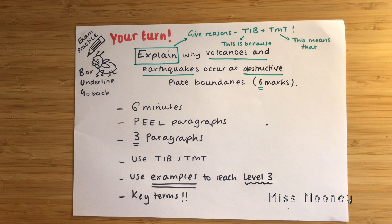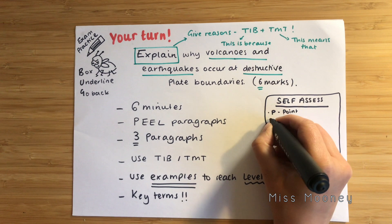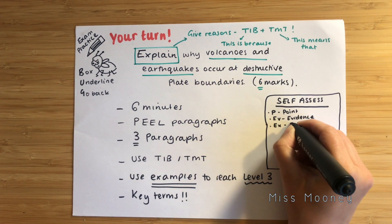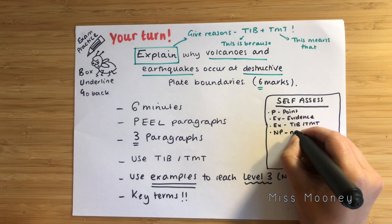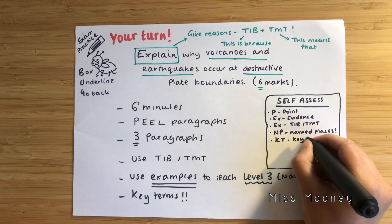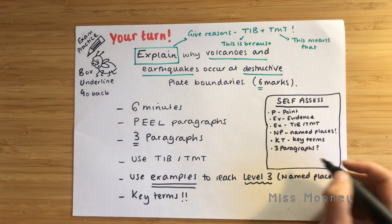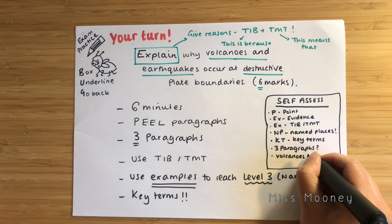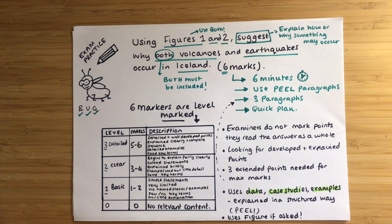Pause the video here and try to write out your six mark answer. Once you've written your answer, you're going to self-assess. Read through your answer and annotate in the margin: P for point, EV for evidence, EX where you have explained using 'this is because' or 'this means that,' NP for any named places, KT for key terms, whether you've included three paragraphs, and whether you talked about volcanoes and earthquakes. Then decide which level you fall into — basic, clear, or detailed — and award yourself a mark out of six.